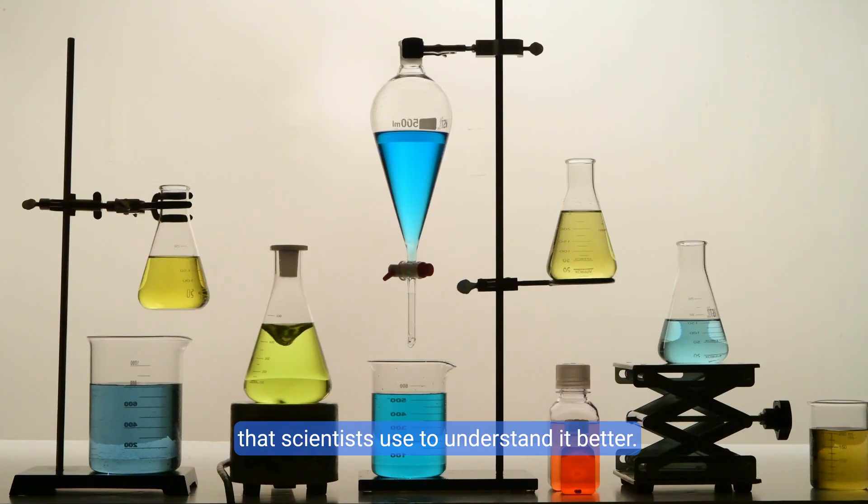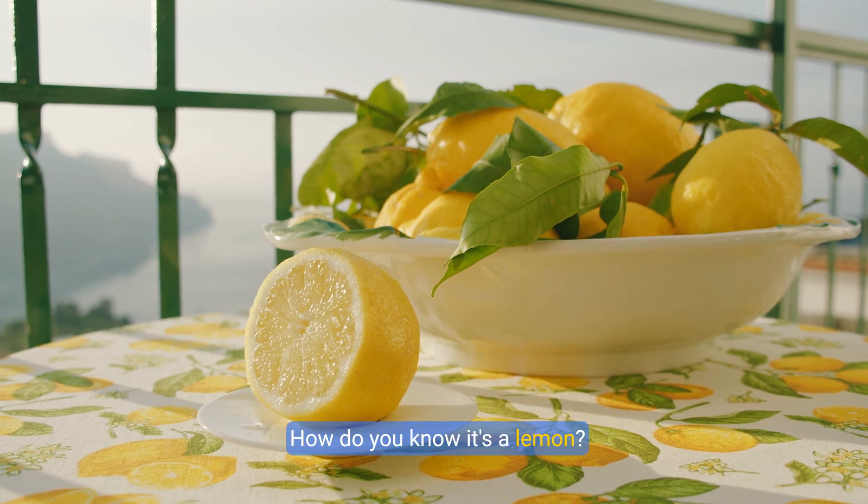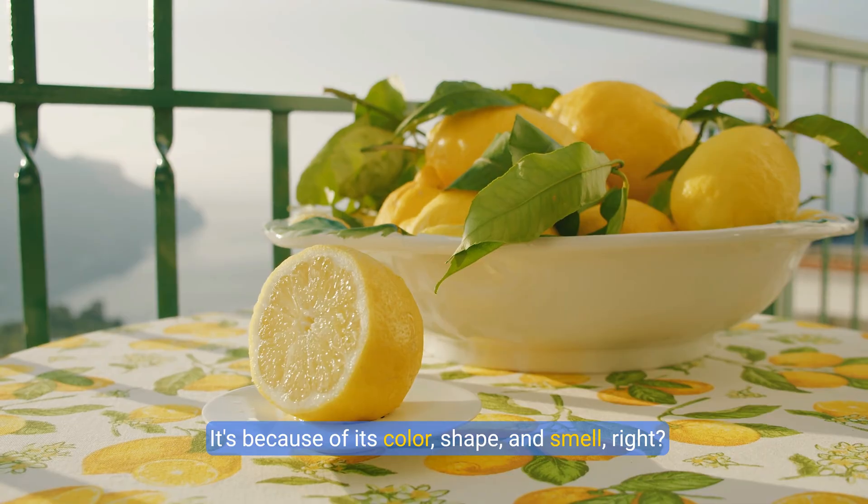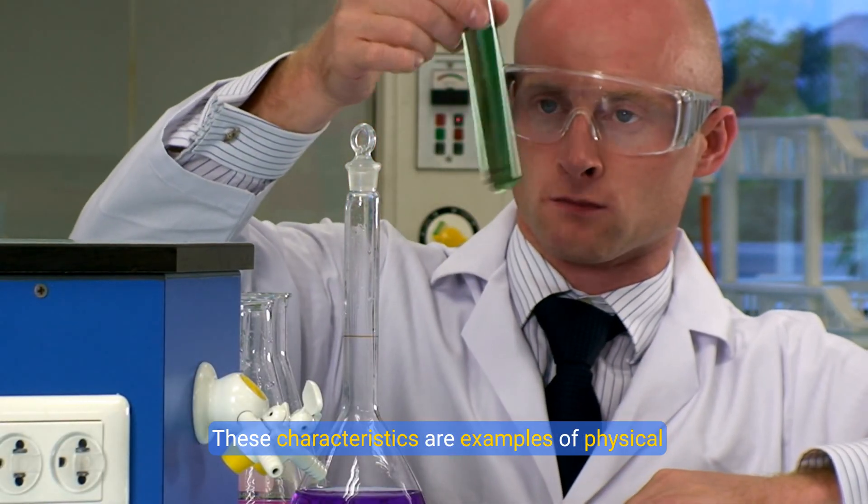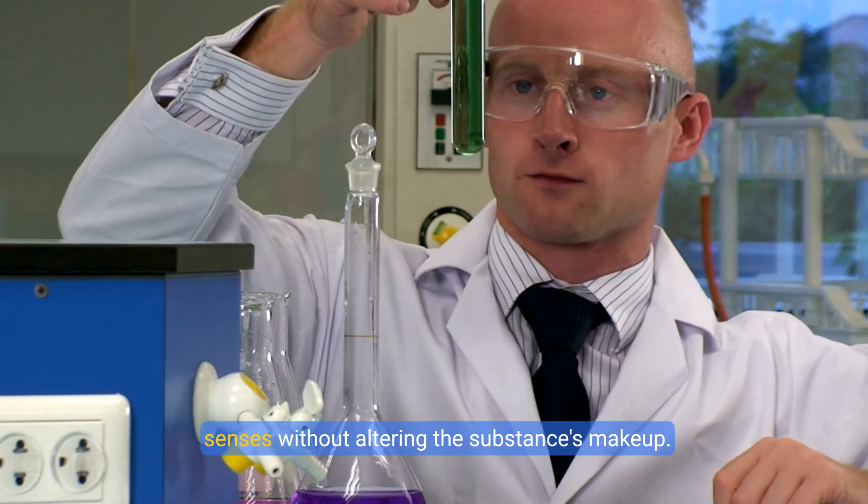Just like your favorite superhero has unique powers, every kind of matter has its unique properties that scientists use to understand it better. Imagine you're in your kitchen and you see a lemon on the table. How do you know it's a lemon? It's because of its color, shape, and smell. These characteristics are examples of physical properties, and you can spot them using your senses without altering the substance's makeup.